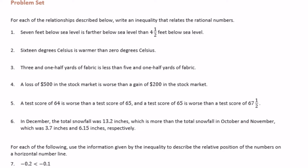Seven feet below sea level is further below sea level than four and a half feet below sea level. Since we're talking below sea level, negative seven is less than negative four and a half. So negative seven is less than negative four and a half.